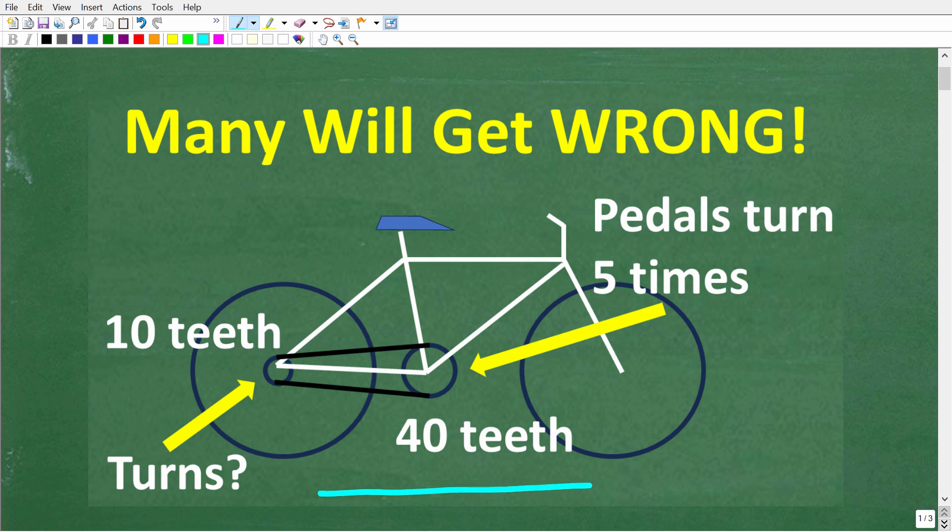So what we have here is a bike, and of course we have a gear here. This is the gear, and here is the pedal, and then we have a small gear in the back. This big gear has 40 teeth. Now of course if you know what a gear is, it has little teeth like this, and it's pulling the chain like so. So I think everyone pretty much knows what I'm talking about.